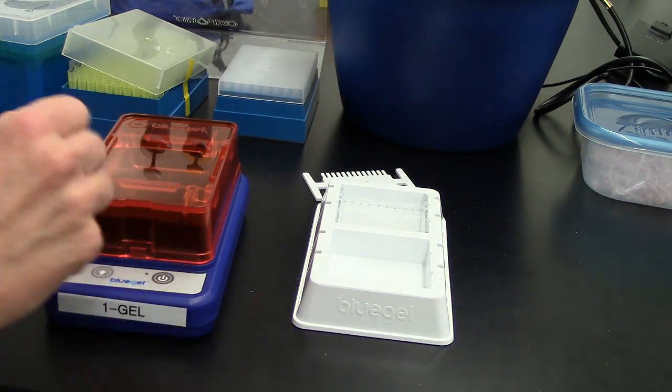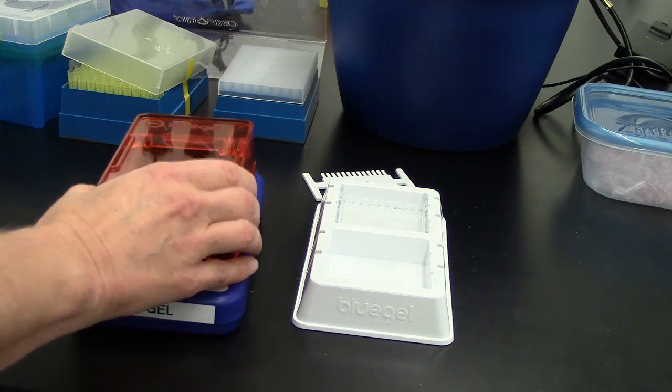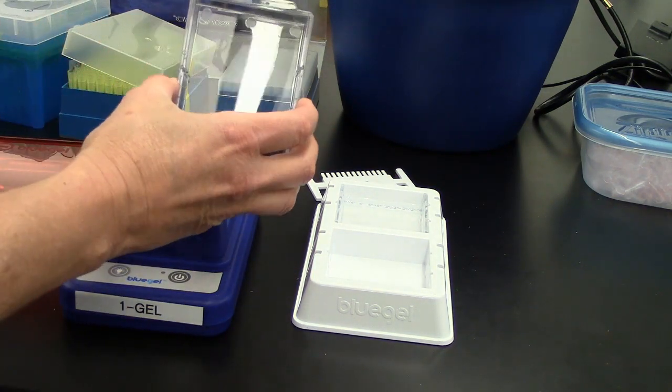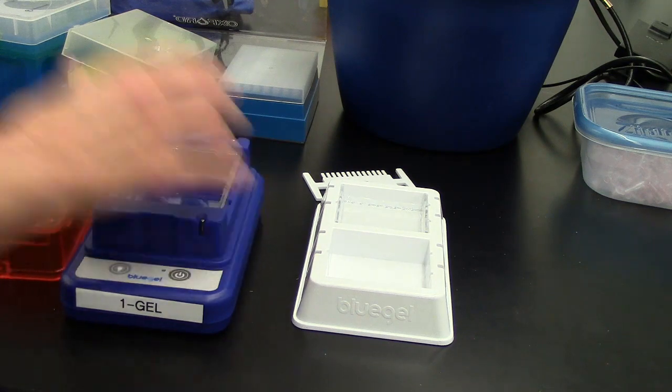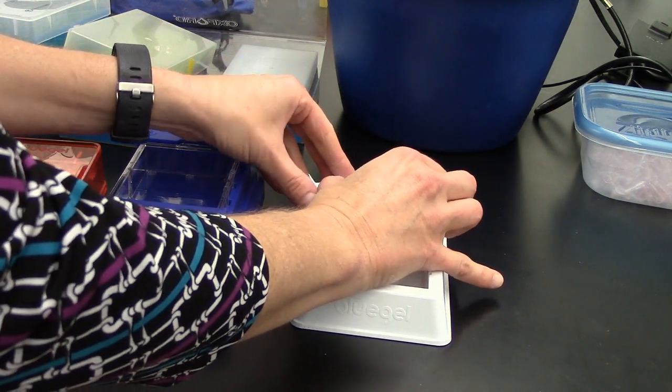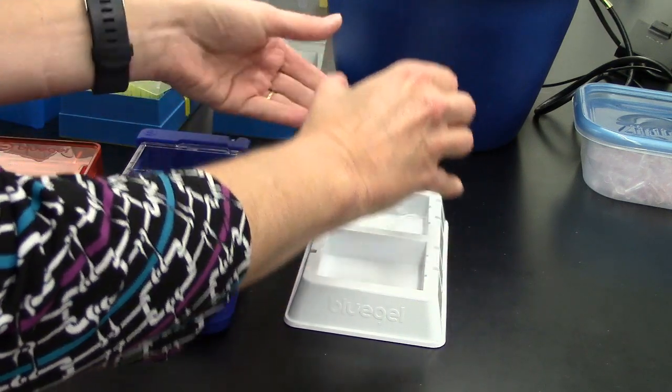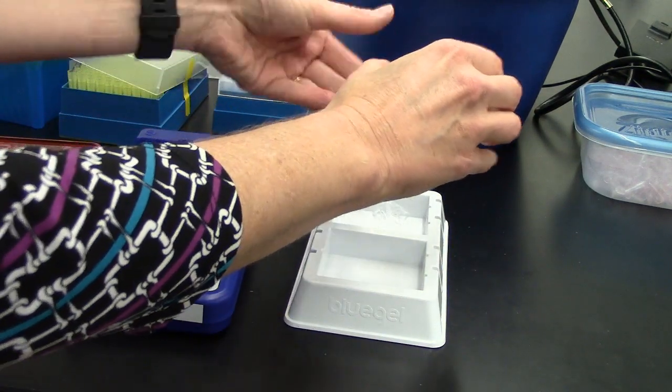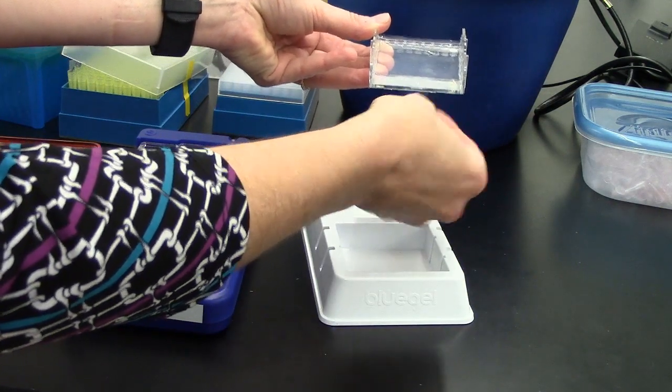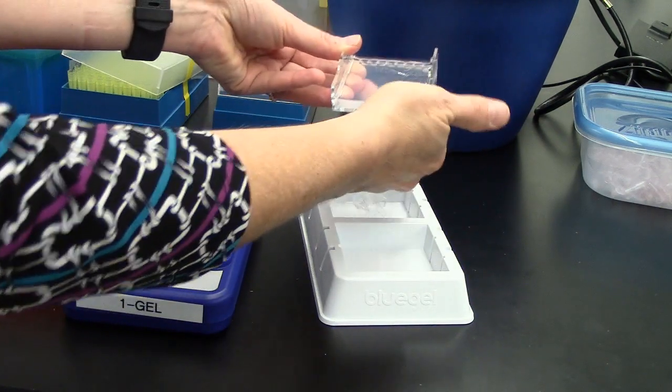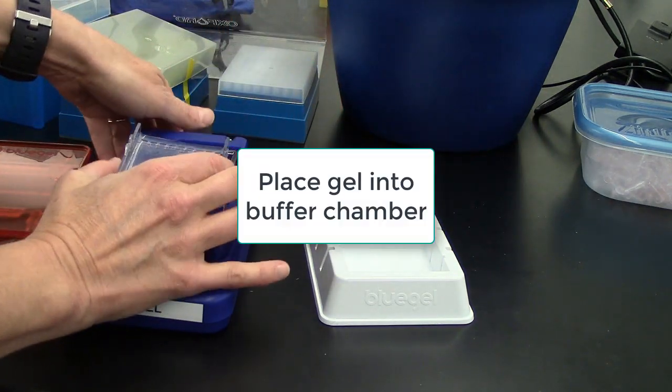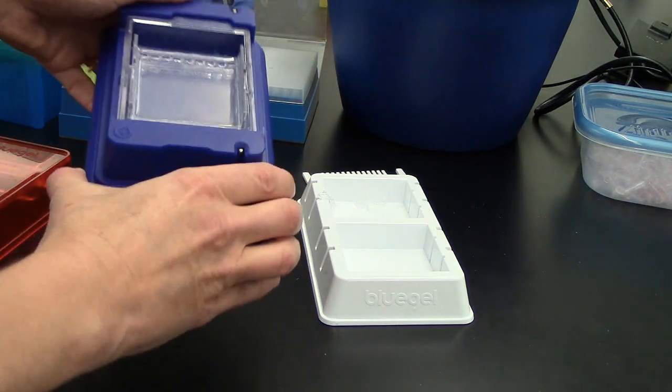Remove the lid of the electrophoresis chamber. Inside the electrophoresis chamber should be a clear plastic tray - make sure that is there. Take your gel out and remove any gel on the bottom, then place the gel into the casting tray.